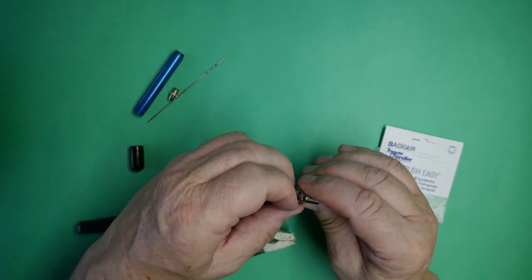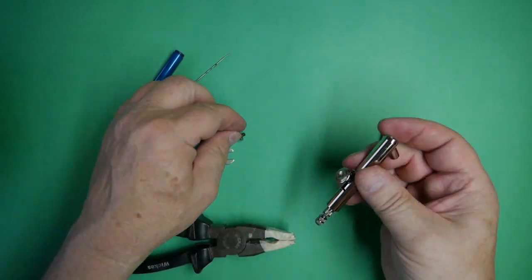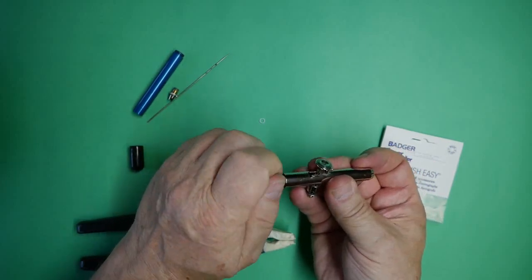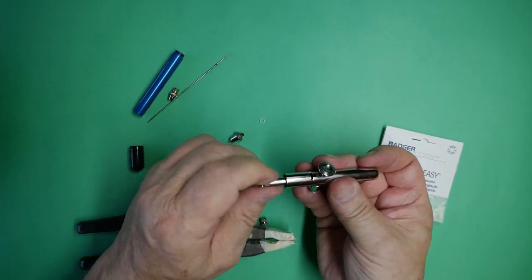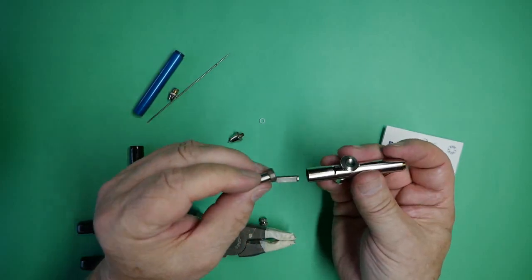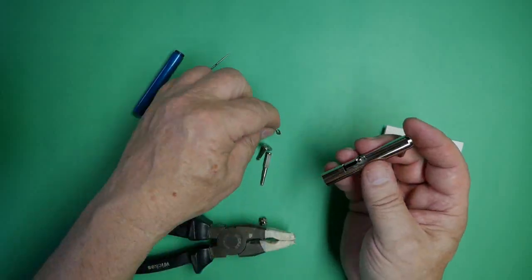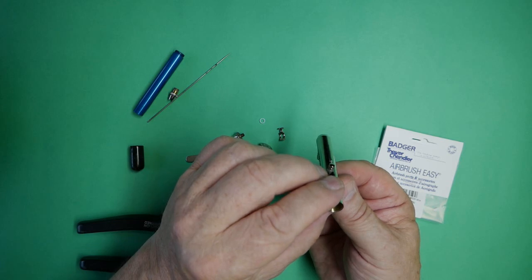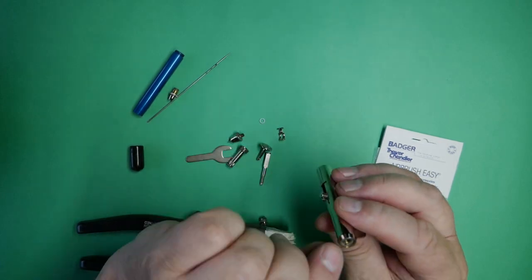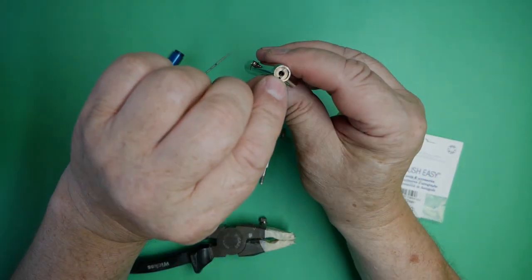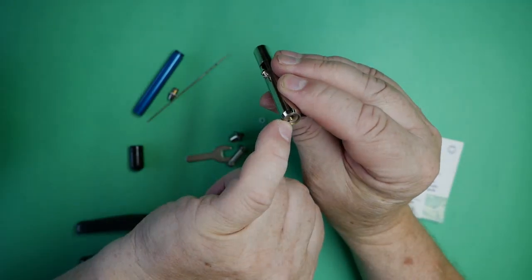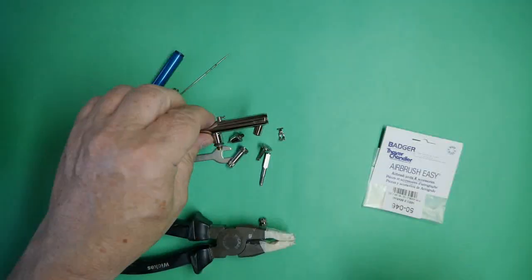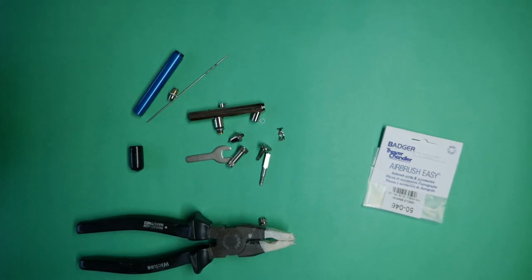The O-ring looks in good condition. Remove the trigger linkage so that we can have a peer into the rear. It does look like the needle bearing is there but down the front here I can see dry paint sticking in the airbrush. So I think the first job will be to put it in to soak.